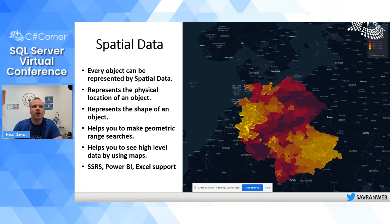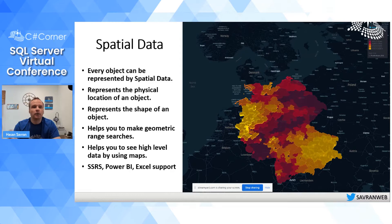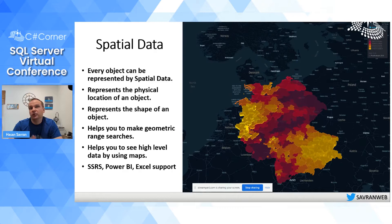Spatial data represents information about the physical location and shape of a geometric object. These objects can be very simple — a point representing an address or location — or complex, like a polygon representing a country, a road, lakes, ponds, or anything with a border. Geospatial data became a very common data type with the rise of mobile devices.